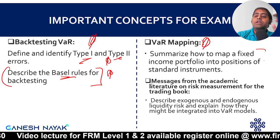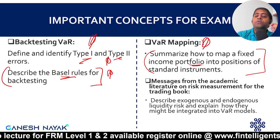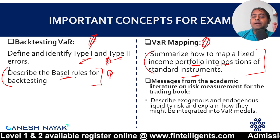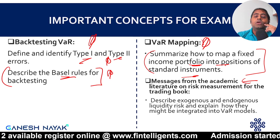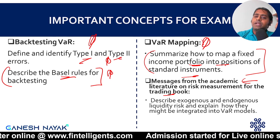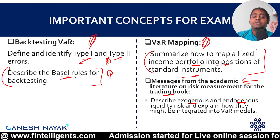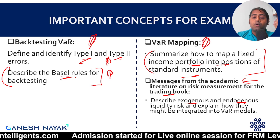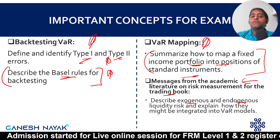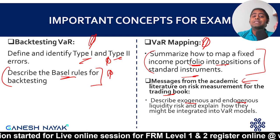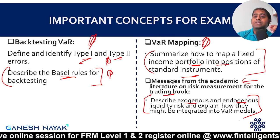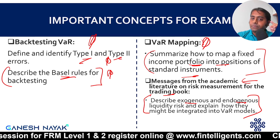For VAR mapping, there is one key learning objective: how the fixed income portfolio is mapped to VAR risk factors — that is what is important for your exam. The 'Message from Academic Literature' chapter focuses on market risk in the trading book, and the concept of exogenous versus endogenous liquidity risk is important. When you try to offload a security or exit a position and there is no liquidity in the market, you keep facing market risk — this concept is also connected to your liquidity book.